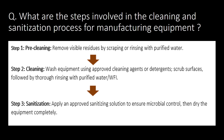What are the key steps involved in the cleaning and sanitization process for manufacturing equipment? Step 1 - Pre-cleaning: Remove visible residues by scraping or rinsing with purified water. Step 2 - Cleaning: Wash the equipment using approved cleaning agents or detergents, scrub surfaces, followed by thorough rinsing with purified water or Water for Injection (WFI). Step 3 - Sanitization: Apply an approved sanitizing solution to ensure microbial control, then dry the equipment completely.